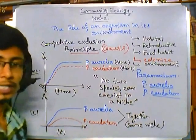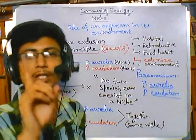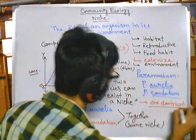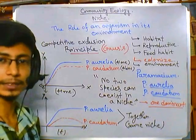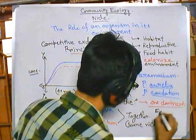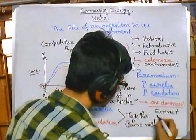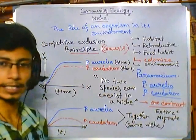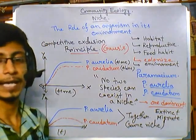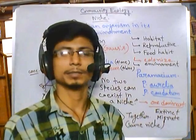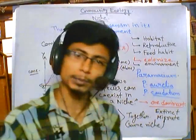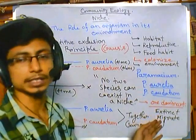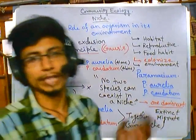From this we infer that no two species can coexist in one niche — this is the competitive exclusion principle. If two species with similar niches are placed in the same environment, one dominant species will kick the other out. The result: one dominant species continues, and the other goes extinct or migrates to another place.